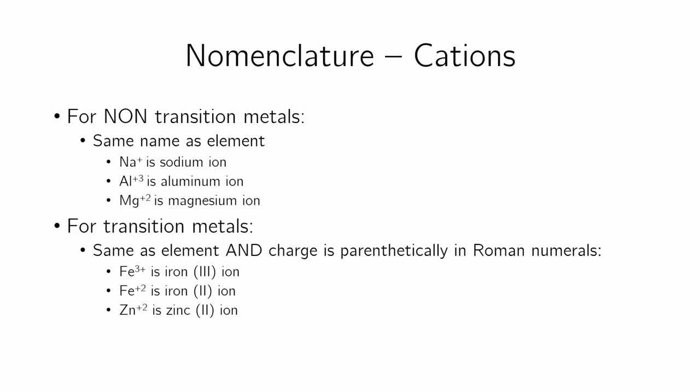If the metal is a transition metal, though, you have to indicate the charge that it has in Roman numerals in parentheses like this. So Fe3+, you just write iron 3 ion, iron 2 ion. Zinc is a transition metal. Zinc 2 ion.